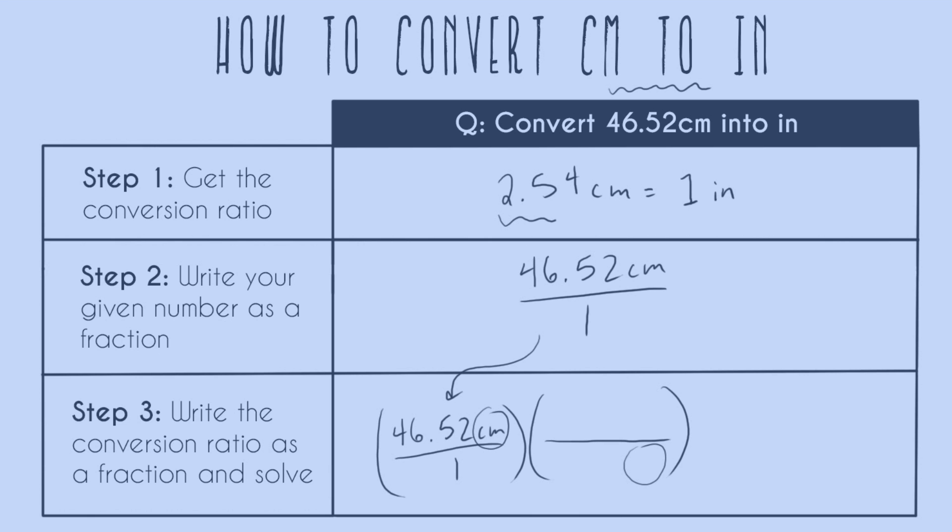So that means that our left hand side here, 2.54 cm, goes down here, which means that one inch goes on the top here. Now we can cancel out, we can see we're going to end up in inches, which is what we want. And we can also see that our math is going to be to divide 46.52 by 2.54. So our final answer is 18.31 inches.